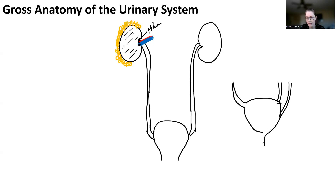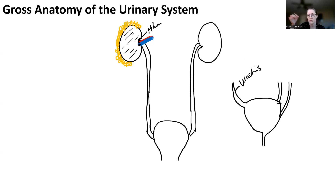The bottom portion is where the urethra comes out. A lot of people ask about the urachus right here — the urachus is basically just a ligament that comes off the anterior portion of the bladder that attaches to the anterior part of the body wall. You should be able to see it in the sagittally sectioned models in lab, and sometimes in your cat it's like a really long, stringy thing that comes off the front part of the bladder.